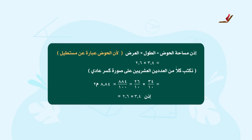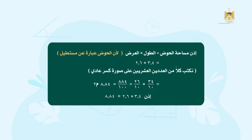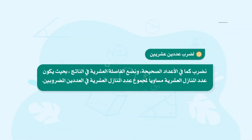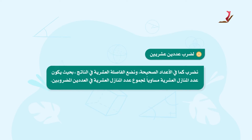إذن أعزاء الطلاب 3.4 ضرب 2.6 تساوي 8.84. والآن ما العلاقة بين عدد المنازل العشرية في الناتج وعدد المنازل العشرية في العددين المضروبين؟ من النشاط السابق نستنتج أنه لضرب عددين عشريين، فإننا نضرب كما في الأعداد الصحيحة، ونضع الفاصل العشرية في الناتج بحيث يكون عدد المنازل العشرية مساوياً لمجموع عدد المنازل العشرية في العددين المضروبين.